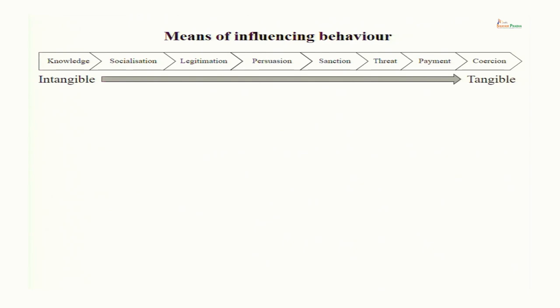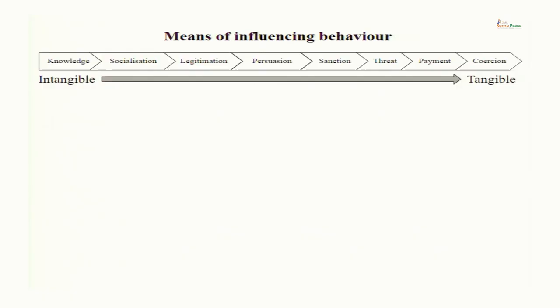Let us discuss what are the means of influencing behavior. This lecture would be a bit theoretical in the beginning. Human behavior can be influenced using different methods. There are certain methods which are tangible — more concrete, which can be seen clearly with our eyes. And it could also be intangible, which cannot be seen with our eyes, which are very subtle. It is a kind of a spectrum, beginning with the most intangible and ending with the most tangible. This figure basically represents that.